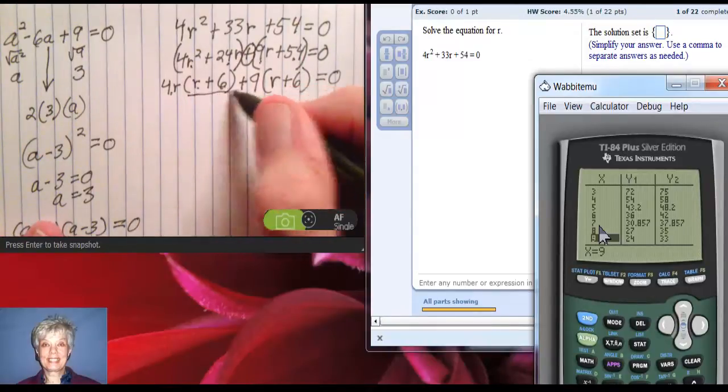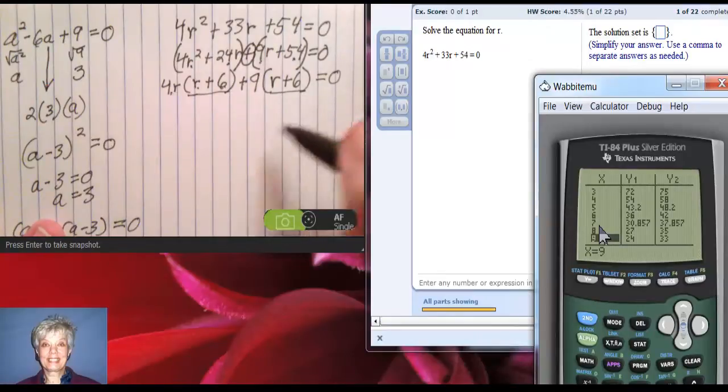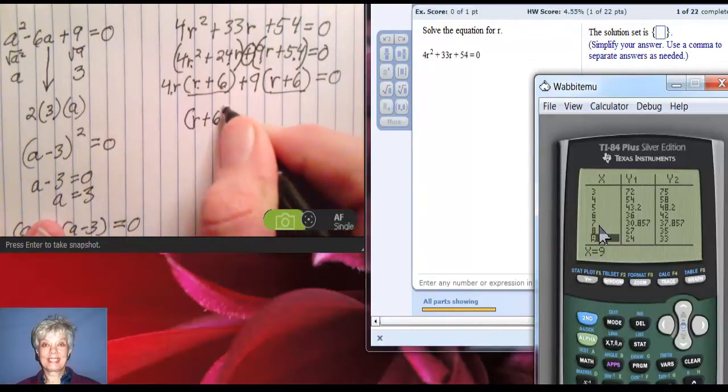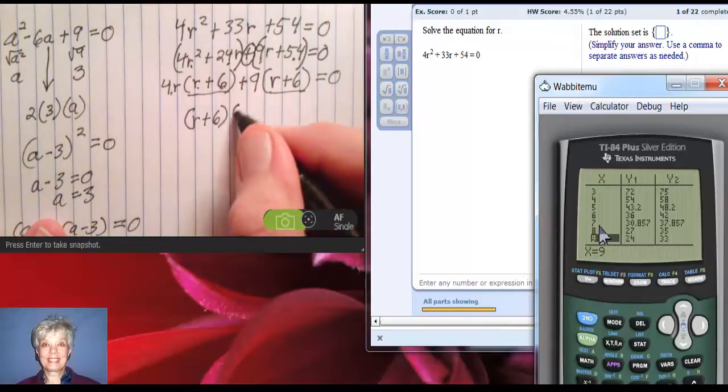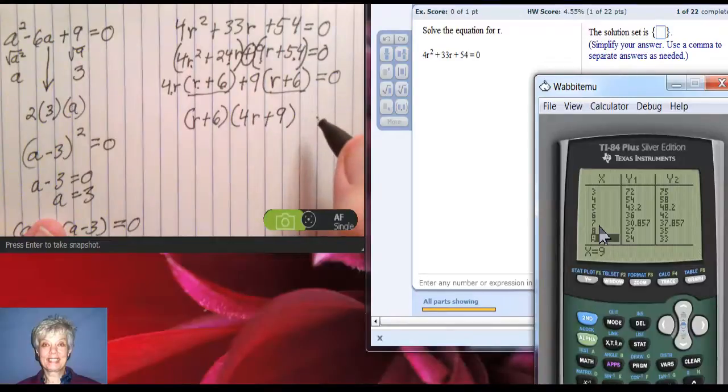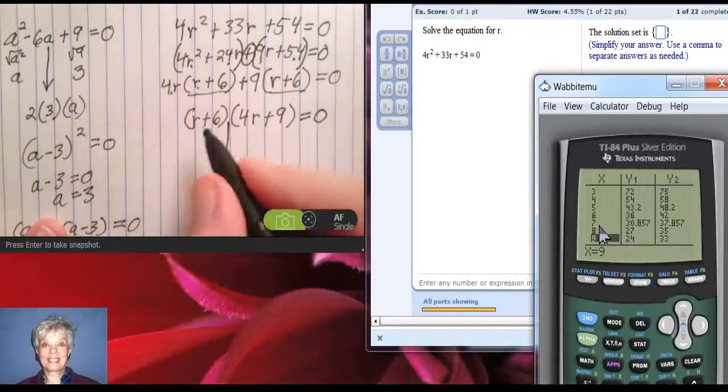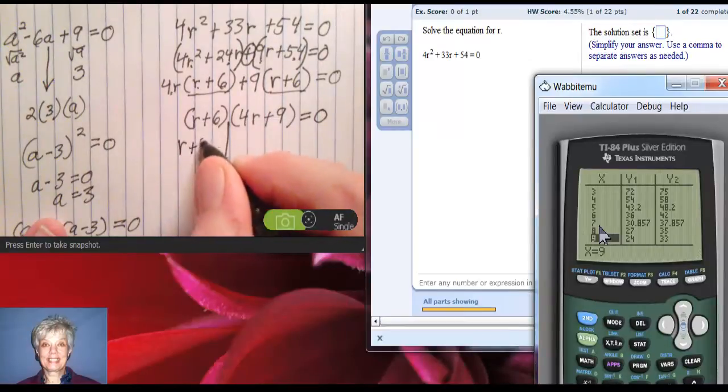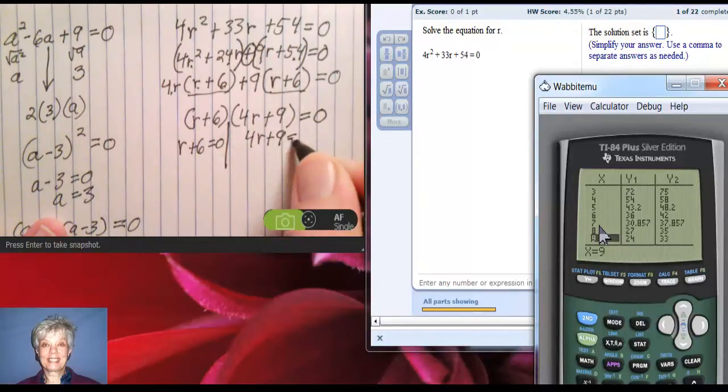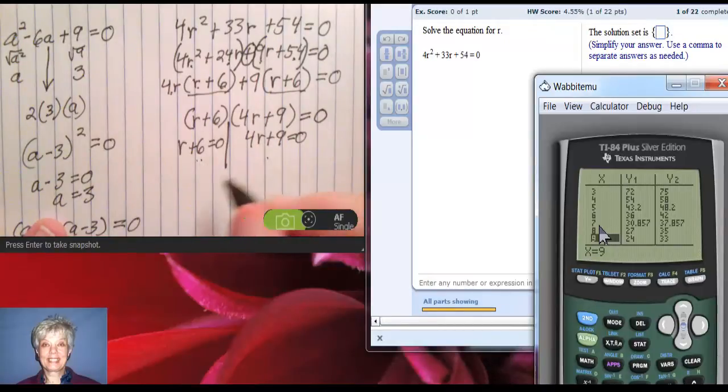Now I have r + 6 and r + 6 in parentheses. They match, so they are the new GCF. I write down (r + 6) in parentheses, and then I write the leftovers 4r + 9. Parentheses closed. Now, if all we were doing was factoring, we'd be done. But we're not doing that anymore. We're solving a quadratic equation. So I'm going to set each individual factor equal to 0.